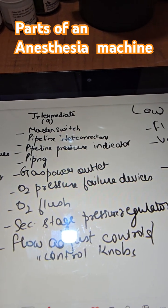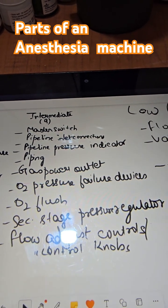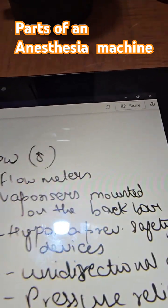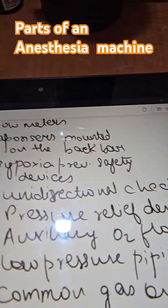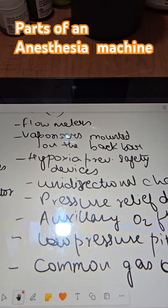The intermediate pressure system also includes the oxygen flush, second stage pressure regulator, and flow adjust controls or flow control knobs.